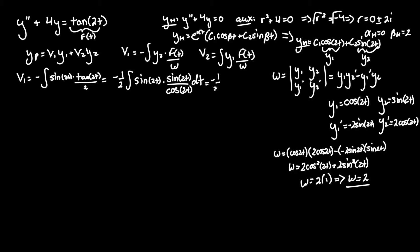This can turn into negative one half integral of sine squared 2t over cosine of 2t. We can use a very similar identity that we just used down here where we can take sine squared of 2t equal to 1 minus cosine squared of 2t and solve from there.